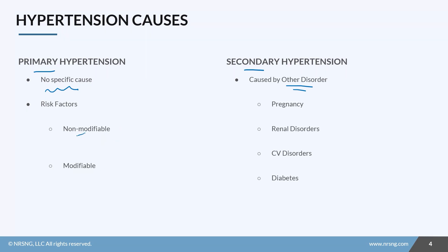Non-modifiable means there's nothing the patient can do about it. These are things like increasing age, family history, and race. In fact, African Americans tend to have a higher risk of hypertension than other races.